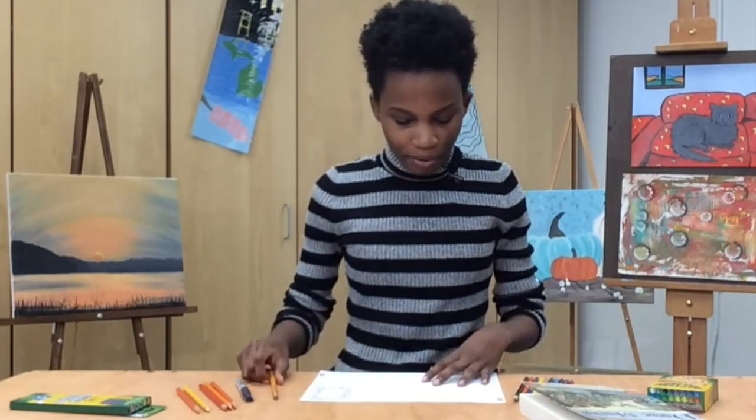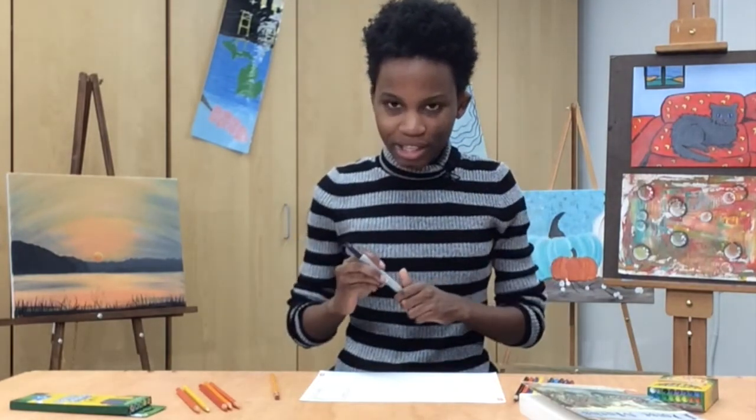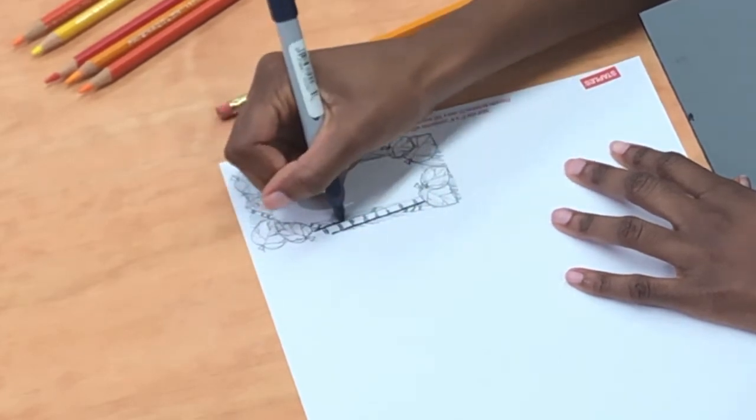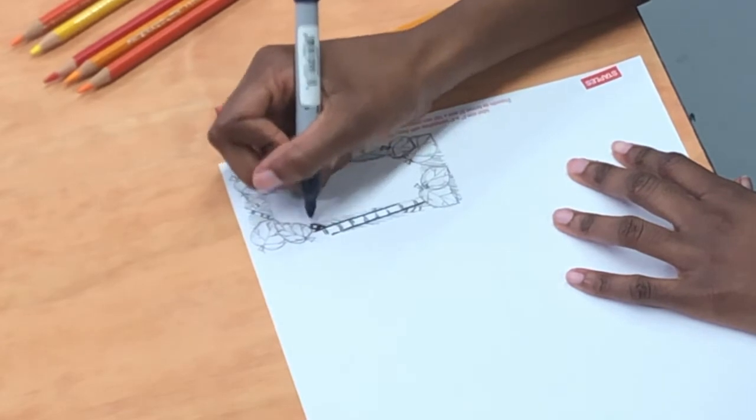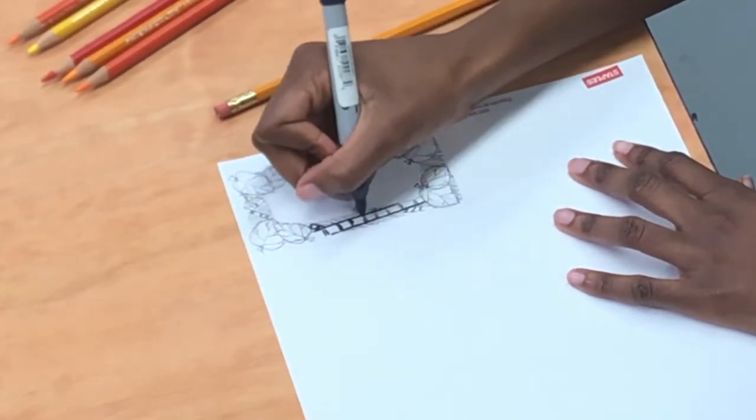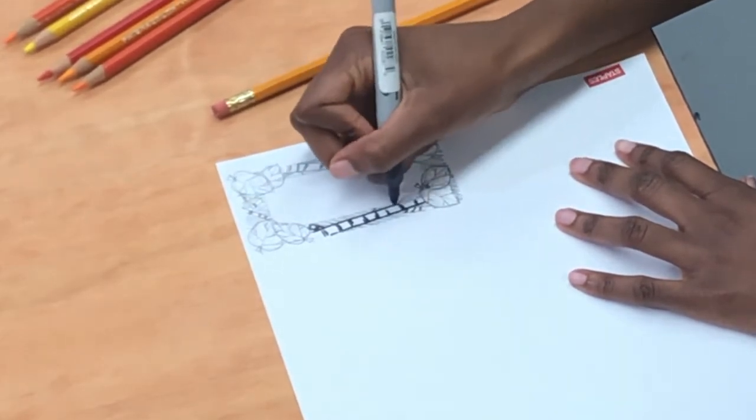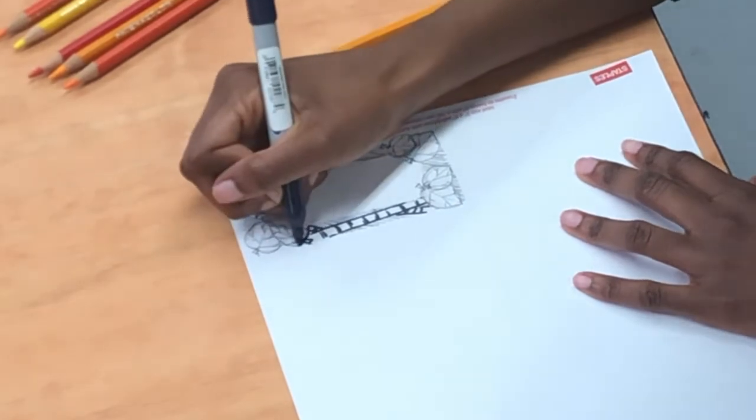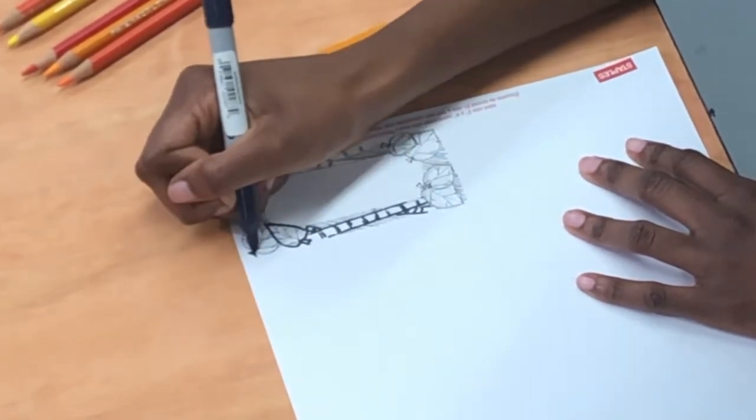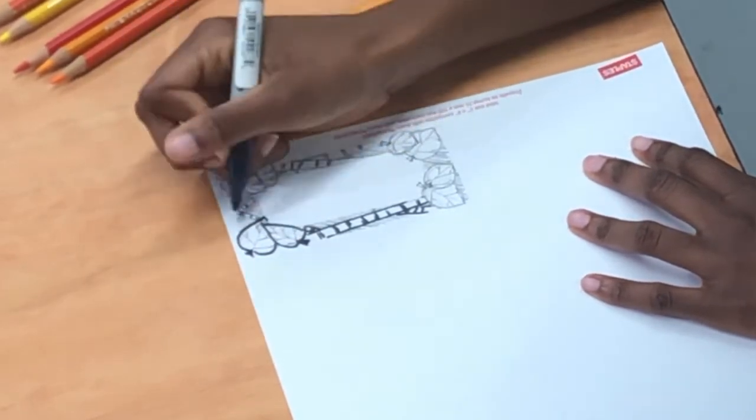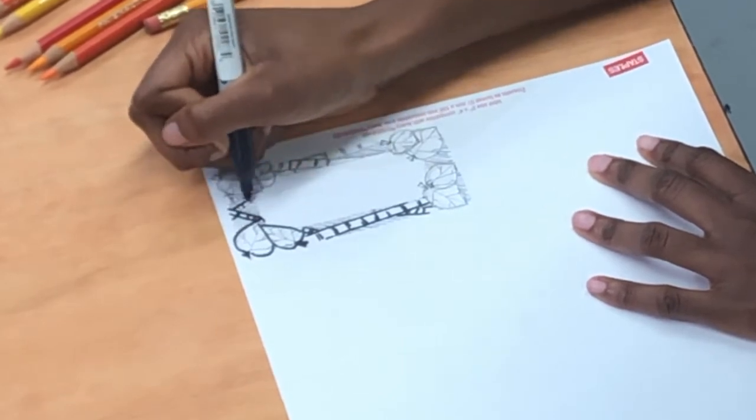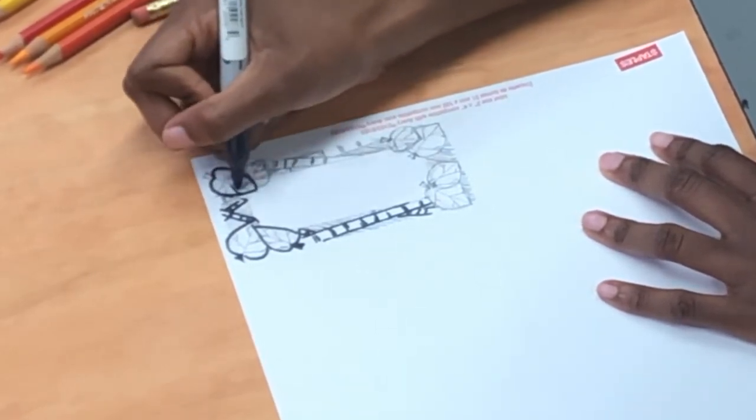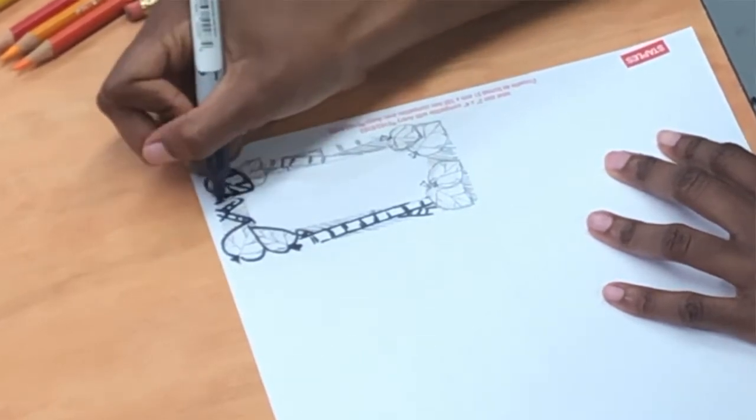From this point I would recommend taking a marker and going over your lines so you can see them better. You don't have to do this but I'm going to do this for my trees so they have a bit of a better outline. And I'm just going over my pencil marks. But if you like your pencil marks, go ahead and keep them.